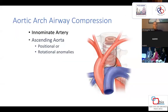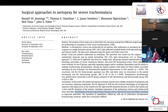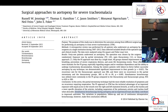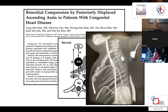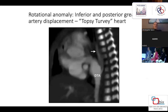The ascending aorta has positional and rotational anomalies. It's really important that when considering aortopexy for severe tracheomalacia, you use simultaneous bronchoscopy during aortopexy — that has probably contributed most to improved outcomes in aortopexy surgery over the last 10 to 15 years. This shows bronchial compression by a posteriorly displaced ascending aorta in congenital heart disease, and a CT scan showing a rotational anomaly with inferior and posterior great artery displacement — so-called topsy-turvy syndrome — and how it frequently compresses the airway.